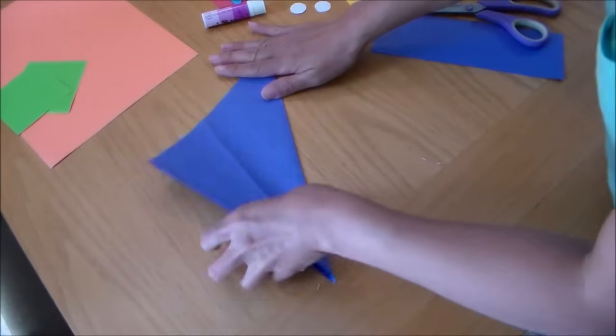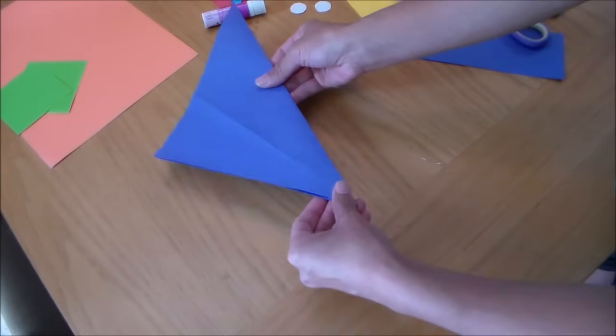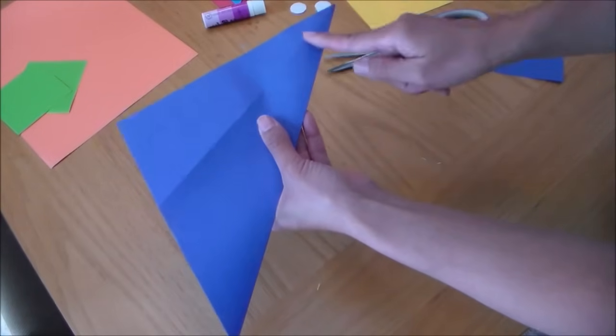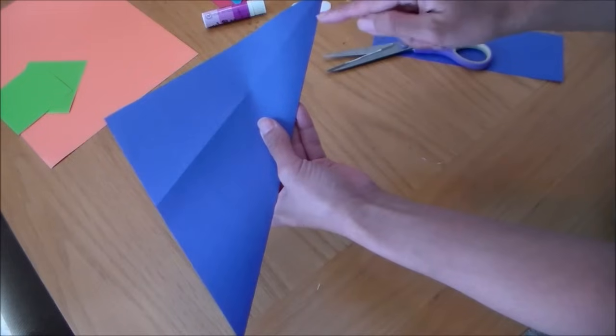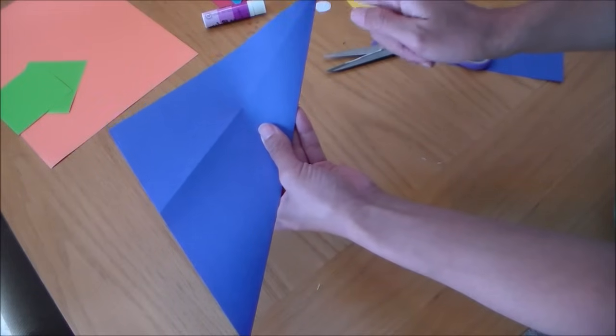Fold it back in half. Now we're going to make quarter inch cuts along the side of the paper, starting about an inch from the end.